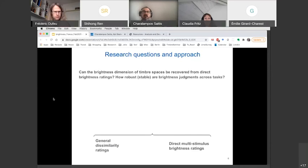Now, however, nobody has really asked the question whether the brightness dimension of timbre spaces, so the spectral centroid dimension of timbre spaces would be recovered from direct brightness ratings. And a similar question is how robust are brightness judgments across different psychoacoustical contexts, different tasks. So to answer that question, we thought of combining general dissimilarity ratings with direct multistimulus brightness ratings. And I will explain in a bit what multistimulus means.